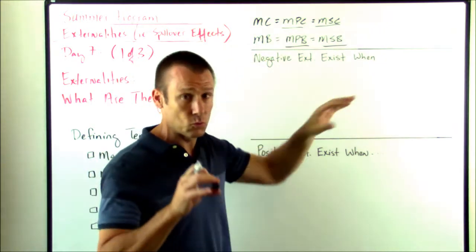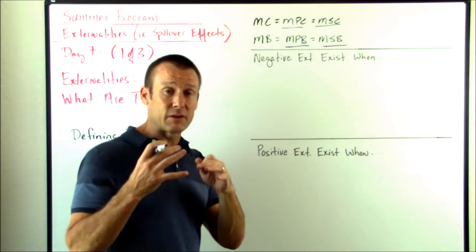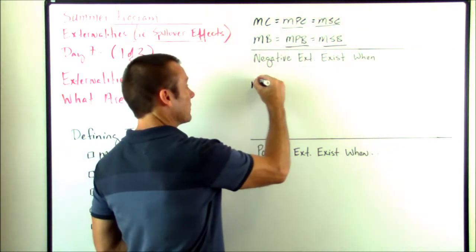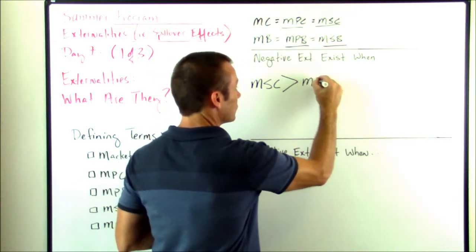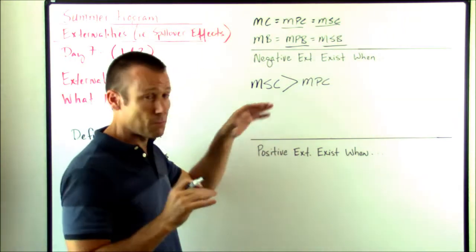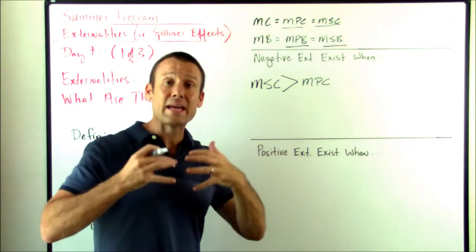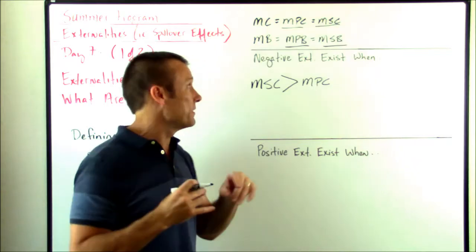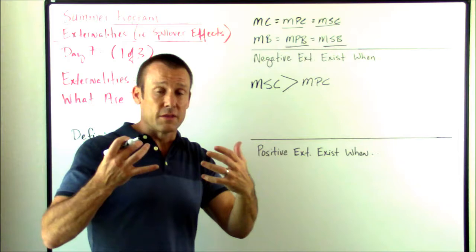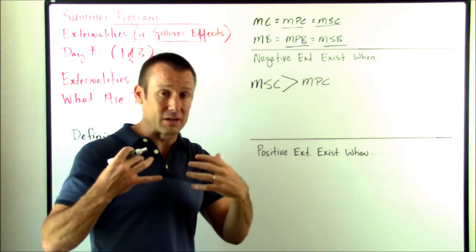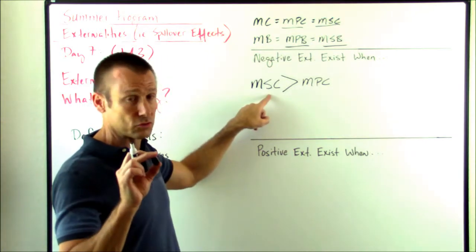Negative externalities exist in two situations. A negative externality on the production side exists when the marginal social cost is greater than the marginal private cost. Why is MSC greater than MPC? Because the marginal social cost takes into account all the private cost, but since this is a negative externality, third parties are incurring an additional cost. That additional cost — which is also a marginal social cost — makes the marginal social cost greater than the marginal private cost.